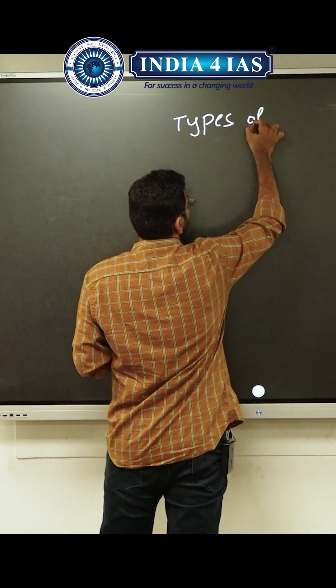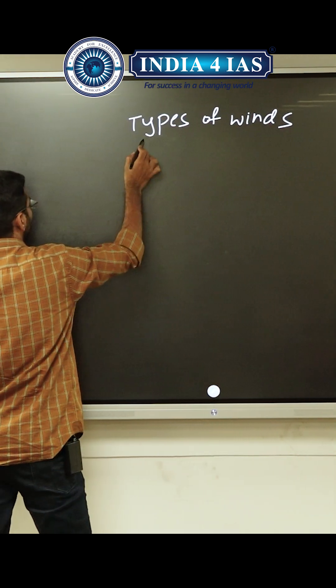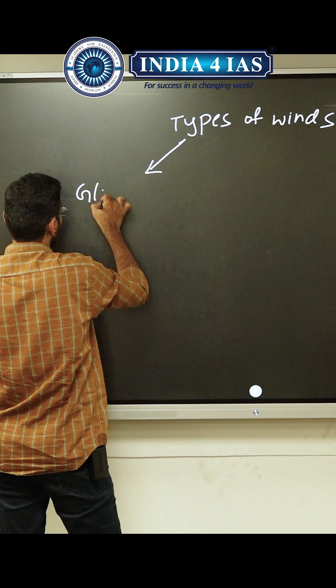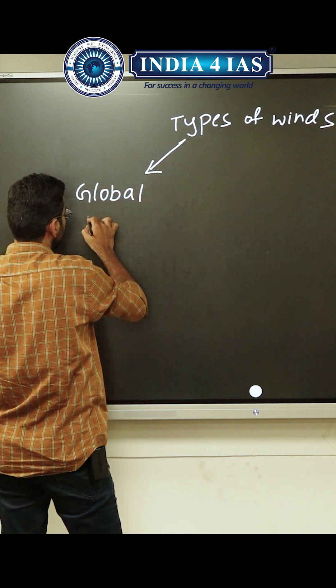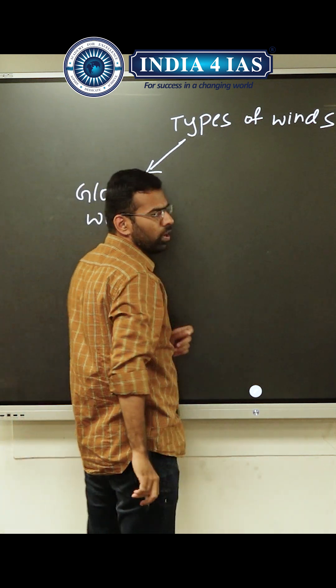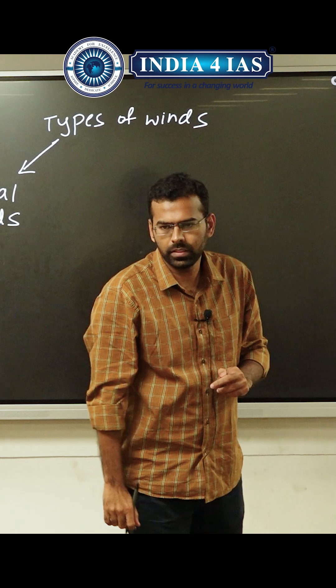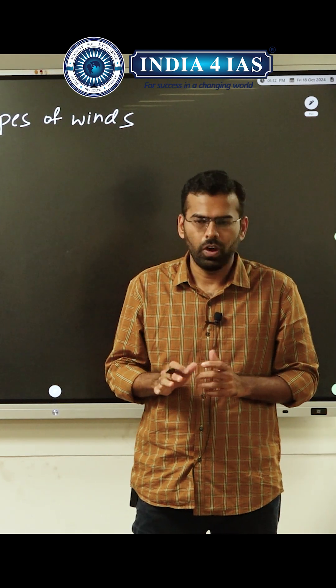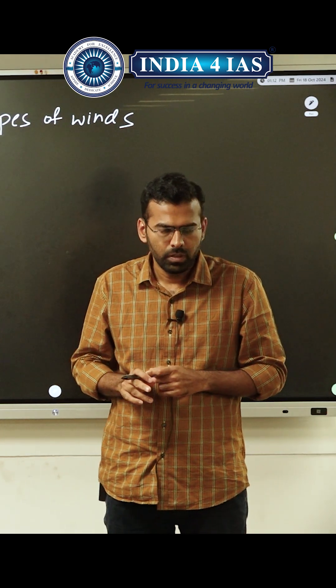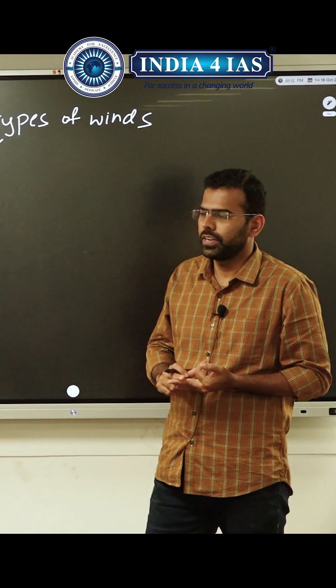Types of winds. So the first type of wind is global winds. These winds blow across the earth based on the latitudes or based on the pressure belts. So your tropical easterlies and polar easterlies are your global winds.